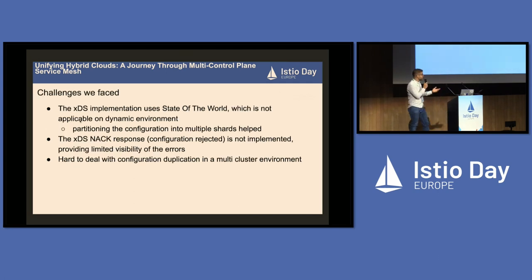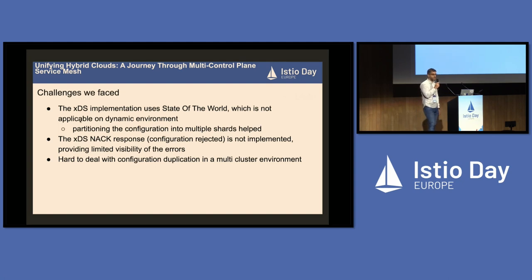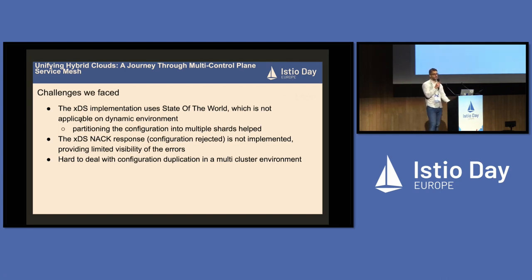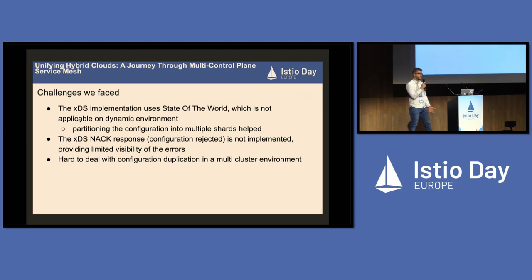Challenges we're facing now, and faced in the past — we're still working on this. The XDS implementation uses state-of-the-world, which is not ideal for dynamic environments because for every request you need to send everything. We overcame this limitation by creating sharding. The NACK response is not fully implemented, and configuration rejections happen later in the stack on Istio, so there is limited visibility of errors. It's also very hard to deal with duplicated configuration — we need to ensure configuration is unique, otherwise Istio goes and sends incorrect configuration to the sidecars.